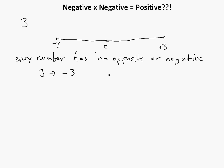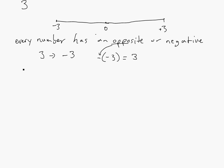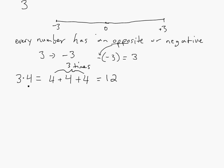The opposite of negative 3 would just be negative, so right here we denote the opposite — we just put a negative. So then this is negative and then that would be 3. Let's consider multiplication. Let's go 3 times 4. You could use summation — this would just be 4 plus 4 plus 4, three times. So 4 plus 4 plus 4 is just equal to 12.